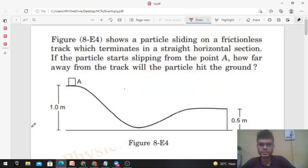Okay, hi everyone. So today let us discuss this interesting problem. It says the figure shows a particle sliding on a frictionless track which terminates in a straight horizontal section. If the particle starts slipping from point A, how far away from the track will the particle hit the ground?